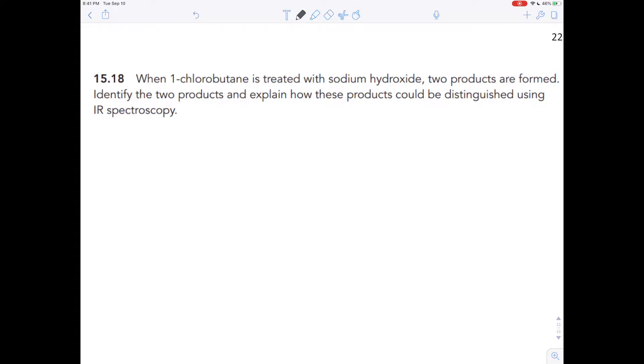Exercise 15.18 says when 1-chlorobutane is treated with sodium hydroxide, two products are formed. Identify the two products and explain how these products could be distinguished using IR spectroscopy.